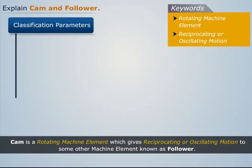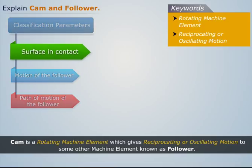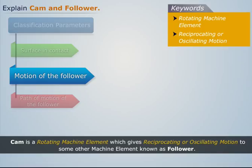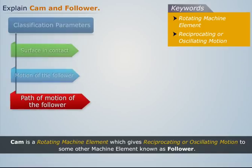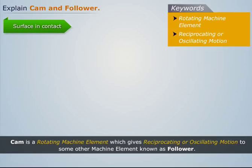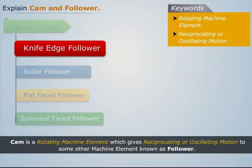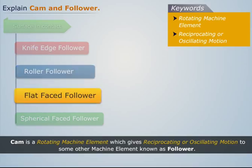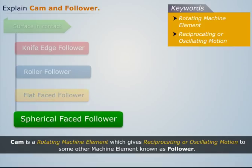Followers can be classified on the basis of the following three parameters: surface in contact, motion of the follower, and path of motion of the follower. On the basis of surface in contact, followers can be classified as knife edge follower, roller follower, flat faced follower, and spherical faced follower.